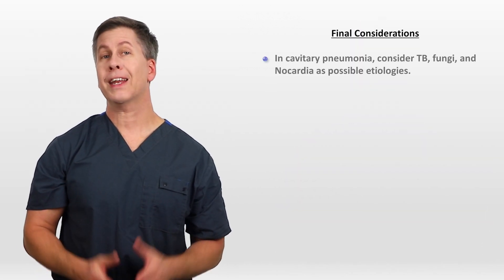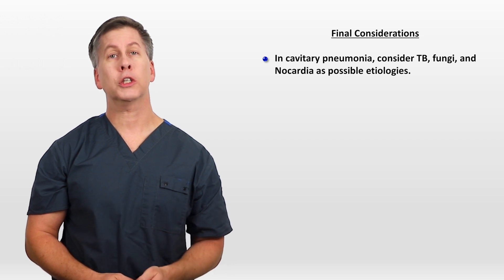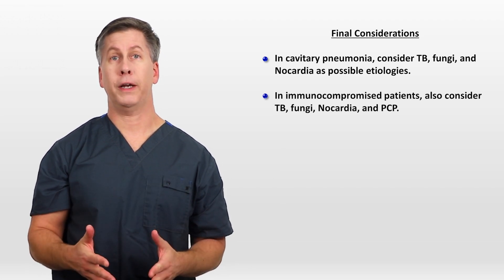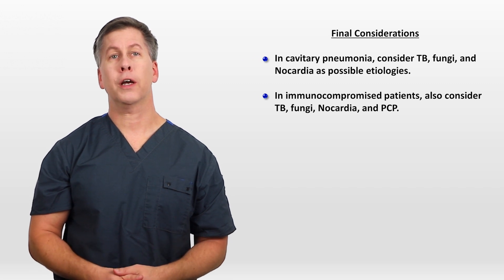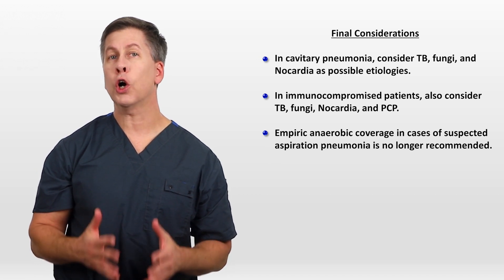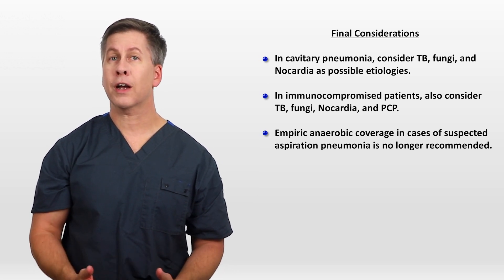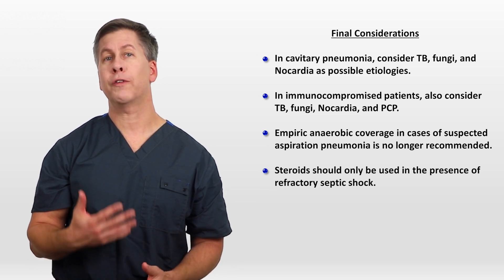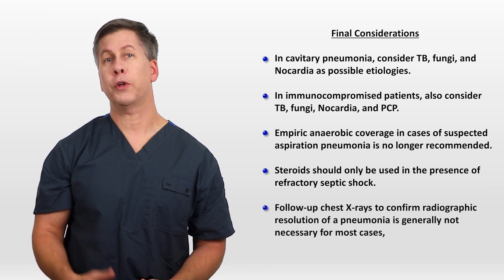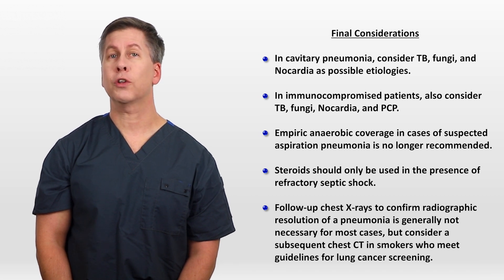Some final considerations. In cavitary pneumonia, that is a pneumonia characterized by one or more cavities on chest x-ray, consider tuberculosis, fungal infections, and nocardia as possible etiologies. In immunocompromised patients, also consider TB, fungal infections, nocardia, and PCP. Empiric anaerobic coverage in cases of suspected aspiration pneumonia is no longer recommended. Although there has been some research into the use of steroids in pneumococcal pneumonia, guidelines at the present time recommend that steroids should only be used in the presence of refractory septic shock. Finally, follow-up chest x-rays to confirm radiographic resolution of pneumonia is generally not necessary for most cases, but you should consider a chest CT in smokers who meet guidelines for lung cancer screening.